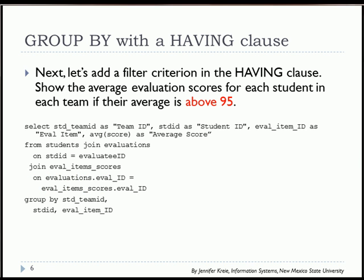So now let's add a HAVING clause where we say we only want to see evaluation scores for students with an average score above 95. What we'll do is add the HAVING clause after the GROUP BY clause.